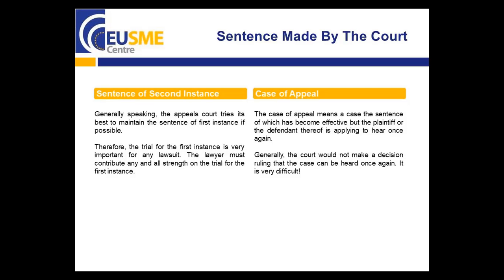The sentence made by the court. Generally speaking, the appeals court tends to maintain the sentence of the first instance if possible. As a result, the trial for the first instance is very, very important for any lawsuit, and the lawyer must contribute all effort to it. The case of appeal means a case whose sentence has become effective but the plaintiff or defendant is applying to have it heard once again. Generally speaking, the court would not make a decision ruling that the case can be heard once again — it is very, very difficult.